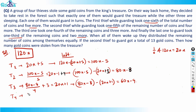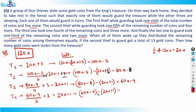The fourth thief took one third of the remaining coins and two more. One third of (60x − 9) is 20x − 3. Adding two more gives 20x − 3 + 2 = 20x − 1. So out of 60x − 9 he took away 20x − 1, leaving 40x − 8.